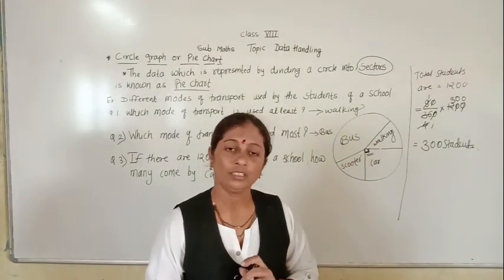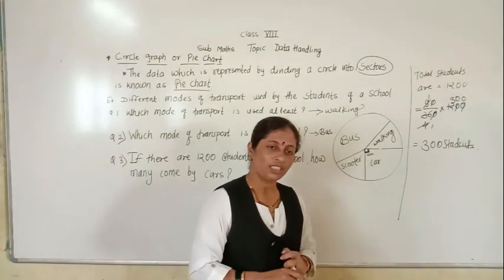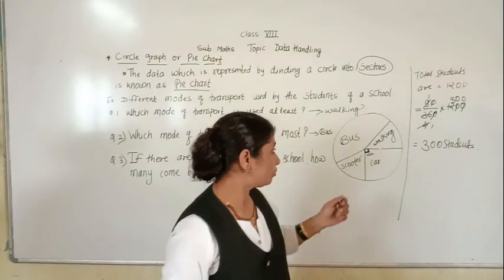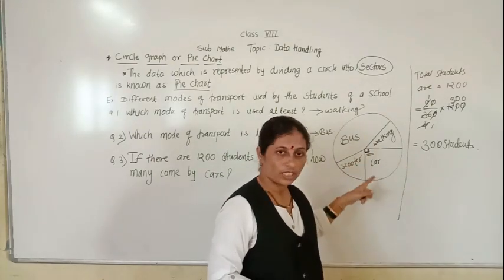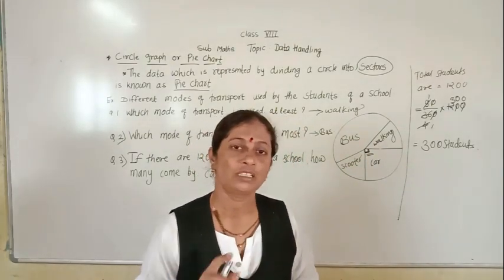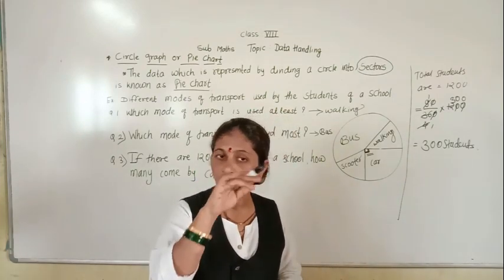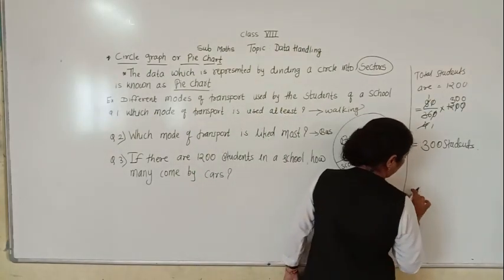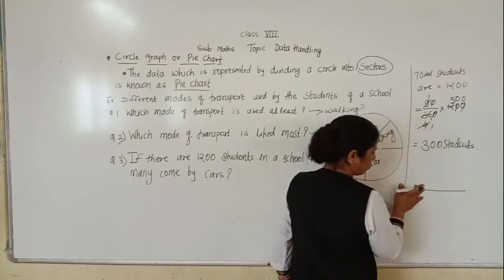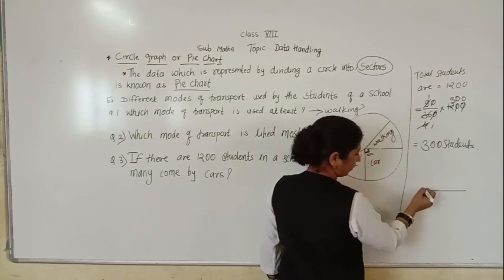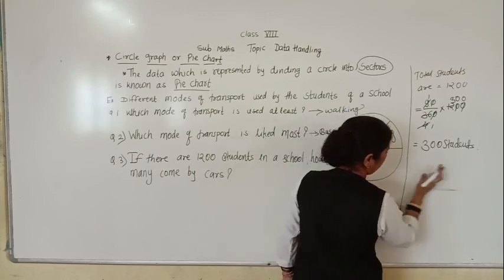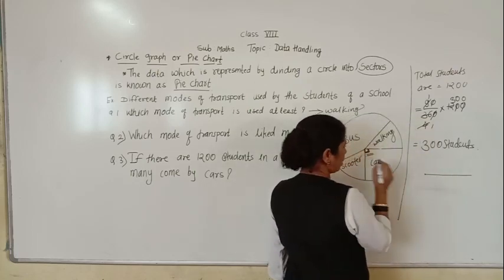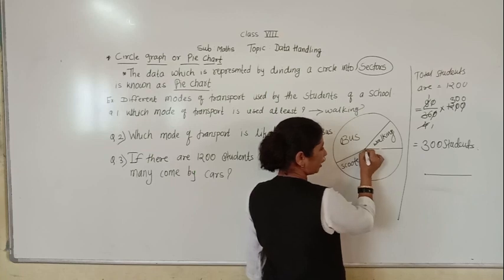Now we will see how to draw a pie chart or circle graph. To draw a circular graph, we need to use a protractor. Everyone knows how to draw an angle. For example, if I want a 50-degree angle, I place the protector at the center point and count from right to left: 10, 20, 30, 40, 50 — and mark that point.